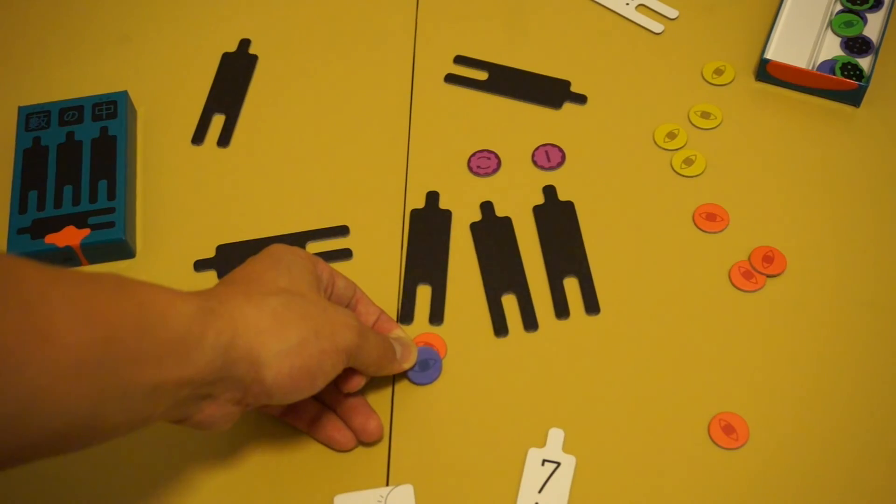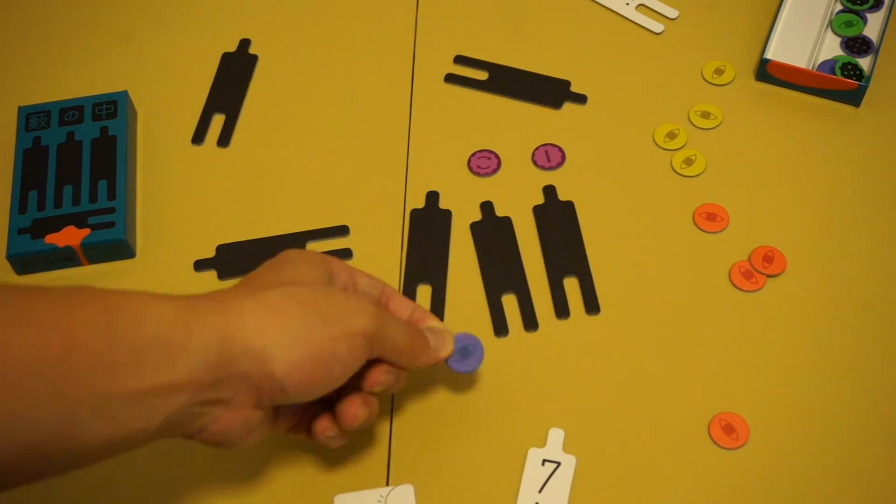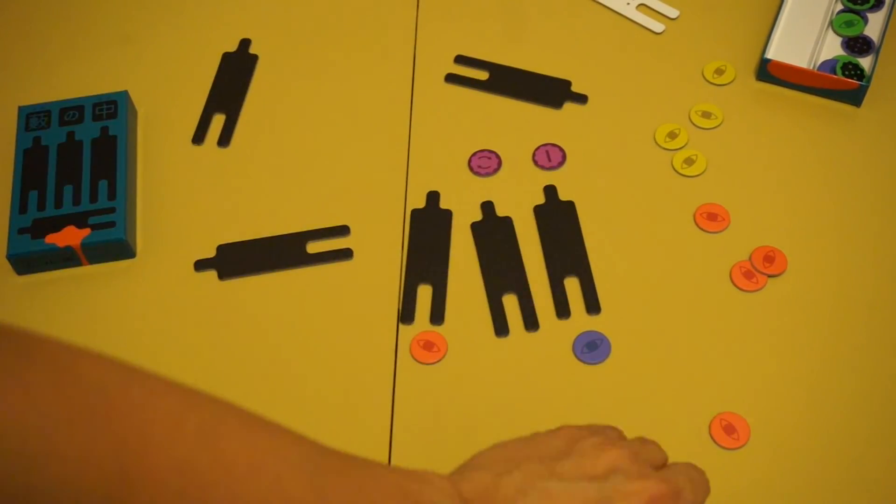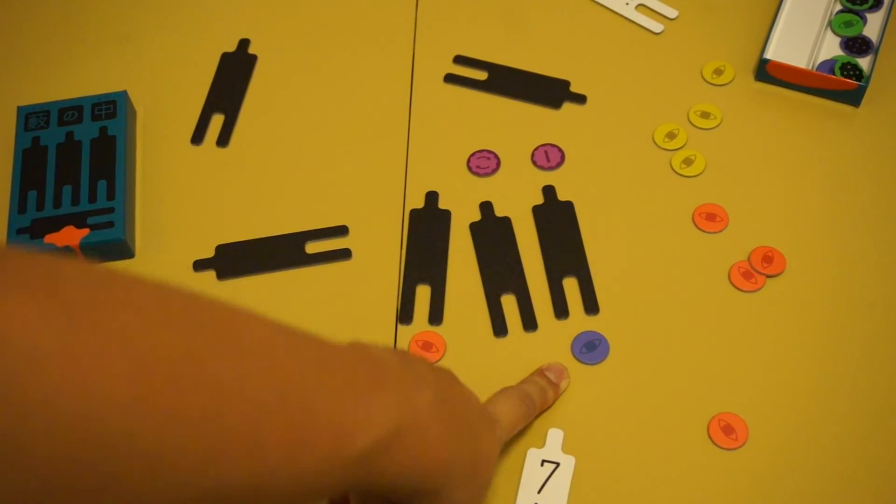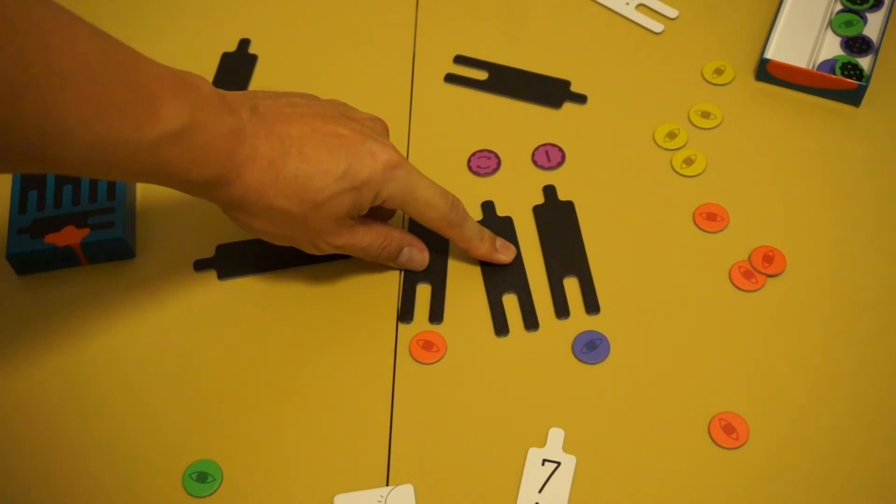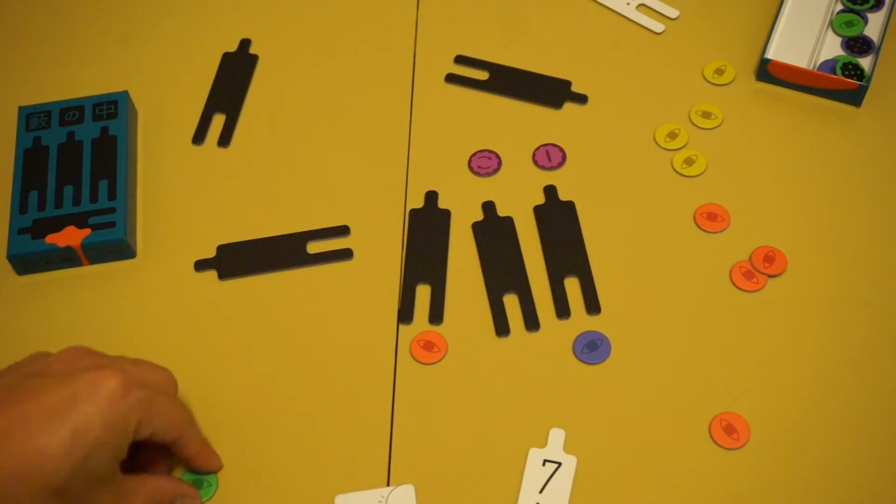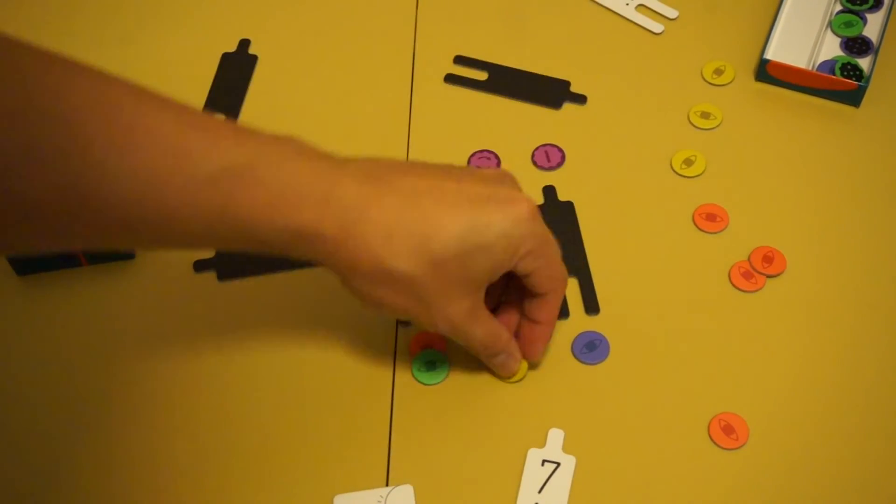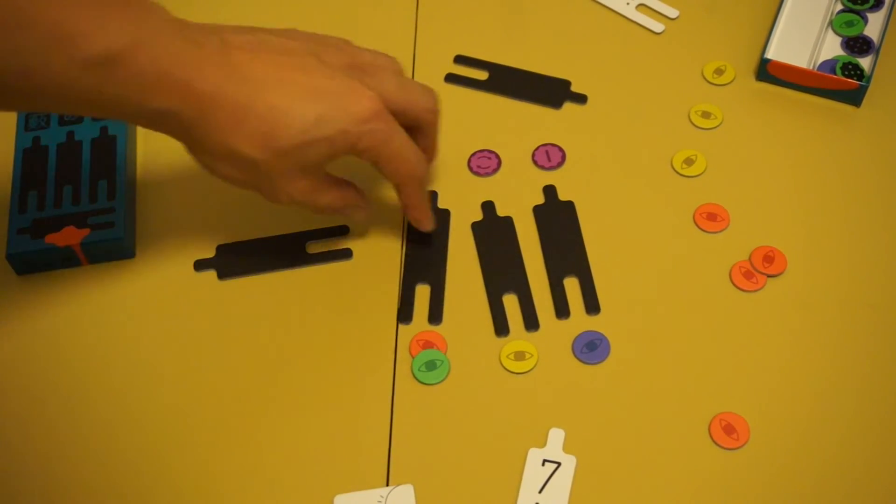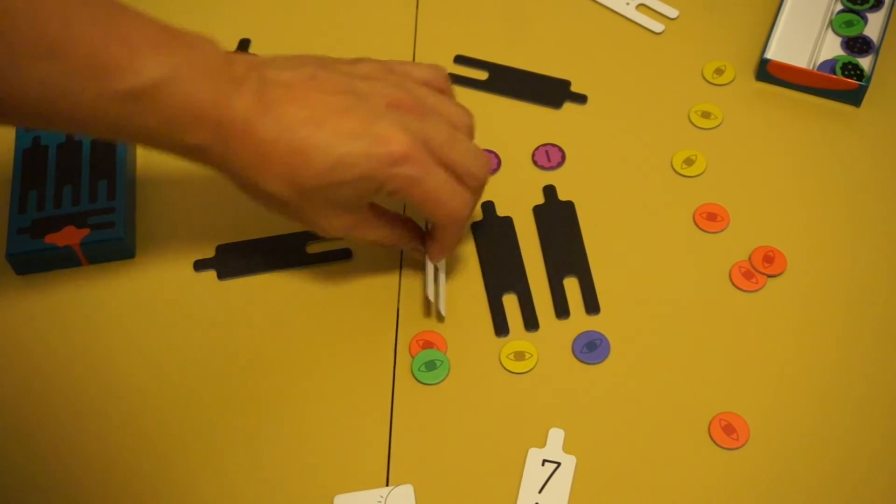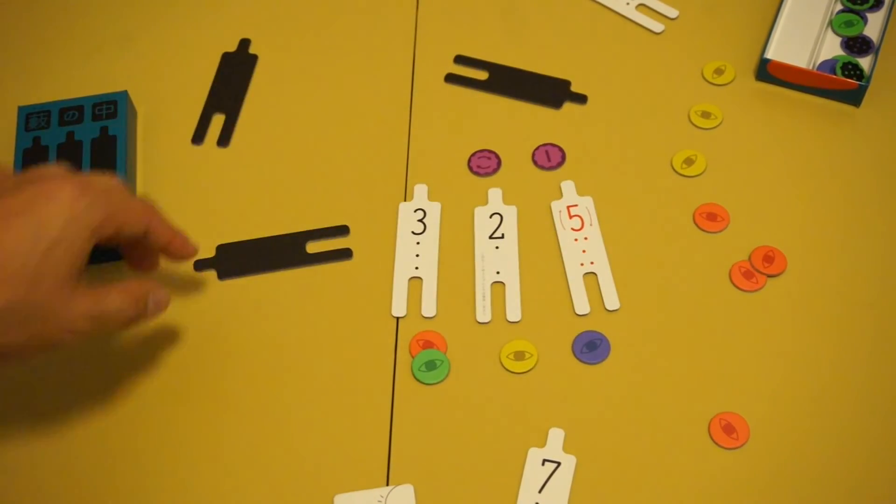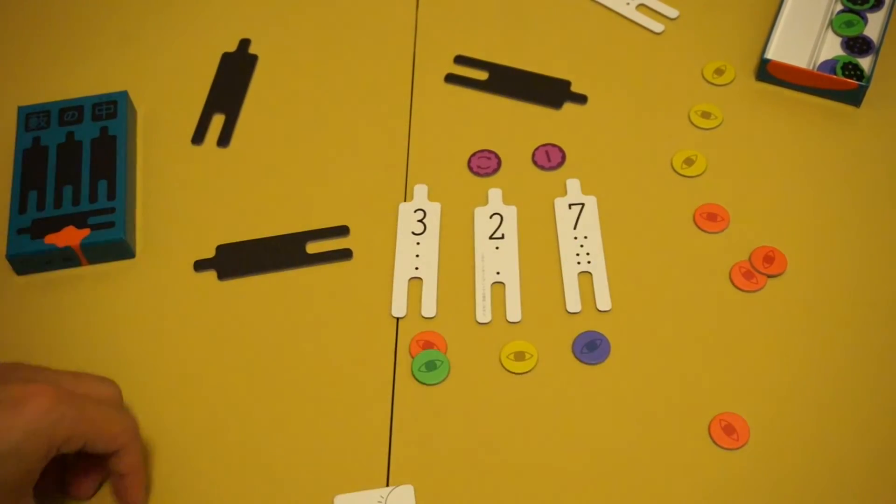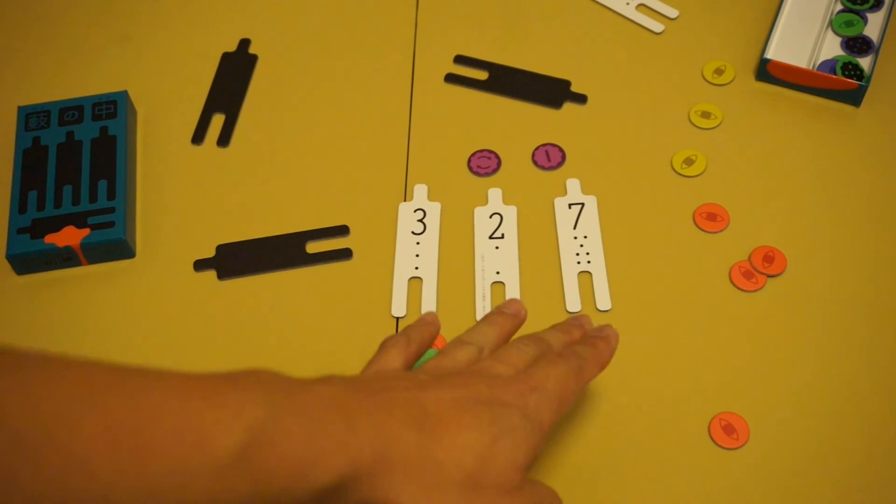So the next player now, let's say for example the green player, he cannot look at the one that the blue player has accused. He can only look at these two. So this goes on until four players have already placed their chits onto the suspects. Then all the players will reveal the three suspects to see who is right and who is wrong. Now typically if this was the case, usually the number that's highest will be the correct suspect. If there was a blank, blank is always innocent.